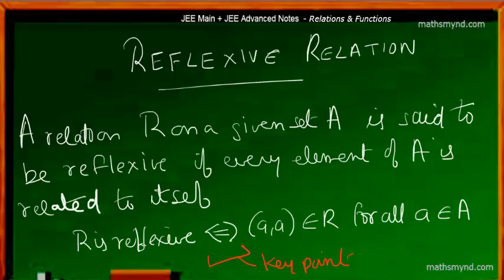We are going on to some important relations which are also quite tricky, in the sense that they have some properties which are quite similar to other kinds of relations. You have to be very clear with what we are dealing with, so as not to confuse it with other similar relations. One of the first of such relations is what we call a reflexive relation.